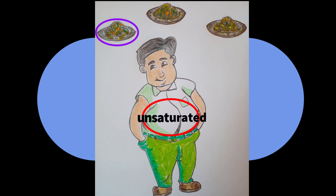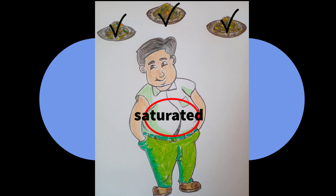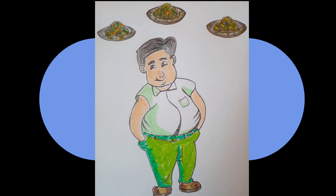Now let the person eat all three plates full of fried rice. According to the maximum holding capacity, the stomach is now 100% satisfied — it is saturated with fried rice. If the person tries to eat more fried rice despite having a saturated stomach, the stomach will refuse and the person will start vomiting; all the excess fried rice will come out and fall down.